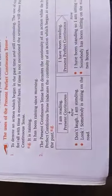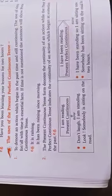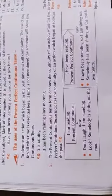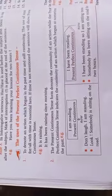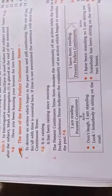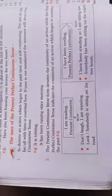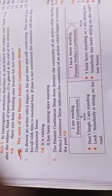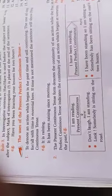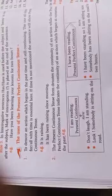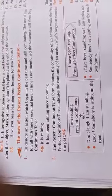The usage of present perfect continuous tense. Rule number one: to denote an action which began in the past and is still continuing. The use of since or for with the time is essential. If time is not mentioned, the sentence shows present continuous tense. Example: 'It is raining' — time not mentioned. But 'It has been raining since morning' — since plus morning is given, which is the time.